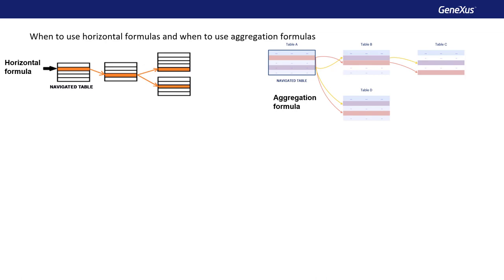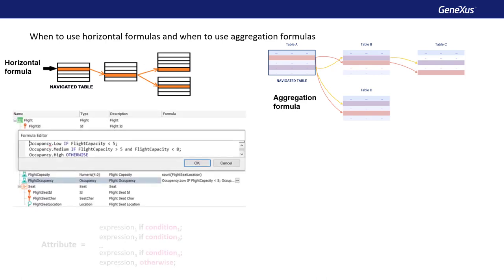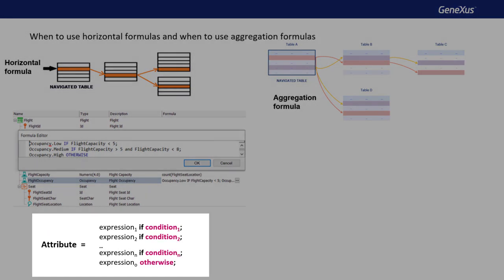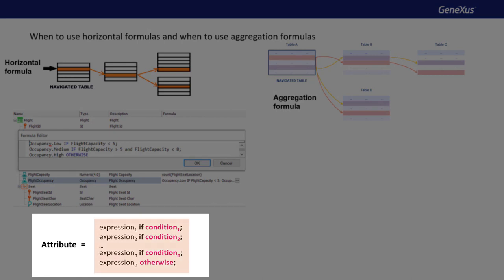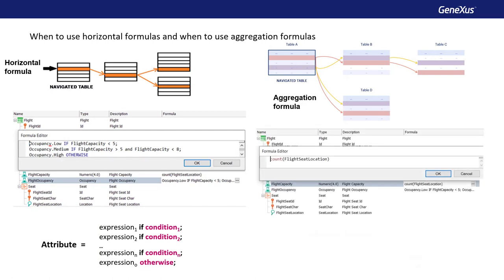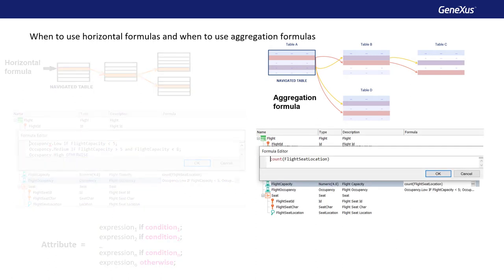Therefore, if we want to retrieve a value from a calculation that can be obtained with data from a single record and the associated records of its extended table, then we write a horizontal formula. This type of formula allows us to assign different values depending on certain conditions, and to take a default value in case none of the established conditions are met. If, on the other hand, we want a value that depends on the search and/or processing of multiple records and their associated records of the extended table, then we'll use some of the aggregation formulas, such as count, sum, max, min, find, or average.